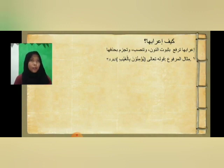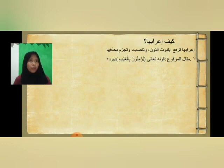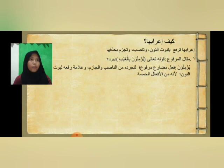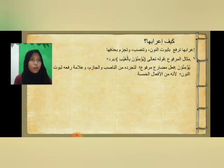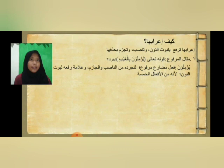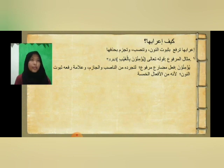Yang pertama, contoh dari dirafa'kan dengan subutun nun. Contoh marfu': misalnya 'Yuminuna' — i'robnya: Yuminuna adalah fi'il mudori marfu' karena tidak dinasopkan dan juga tidak dijazamkan, dan alamat rafa'nya dengan subutun nun karena termasuk dari Af'alul Khamsah.